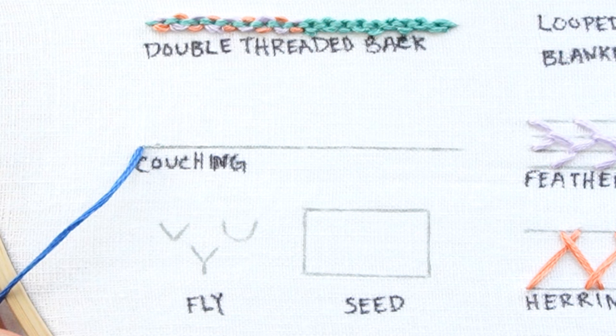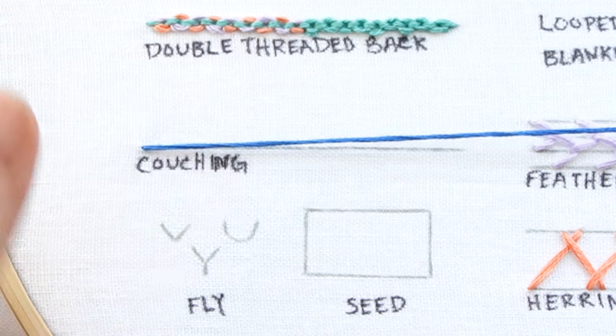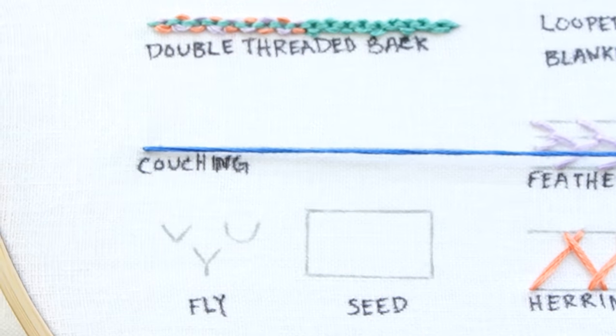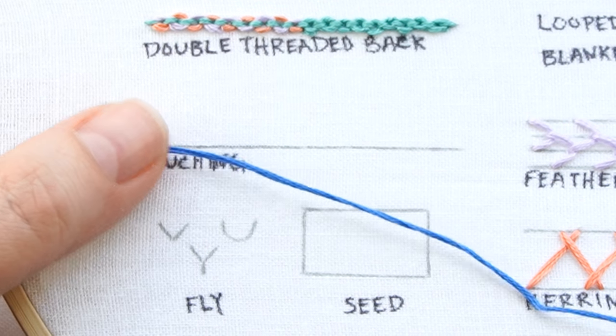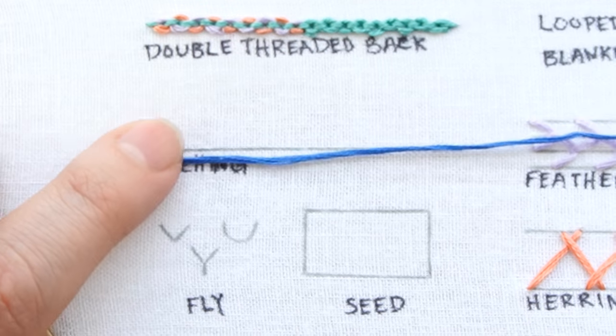For couching, you actually use two threads. I've got my first thread here that's going to lay along this line, and I've already got that coming up through the back. Then you have a second thread that I'm going to bring up.